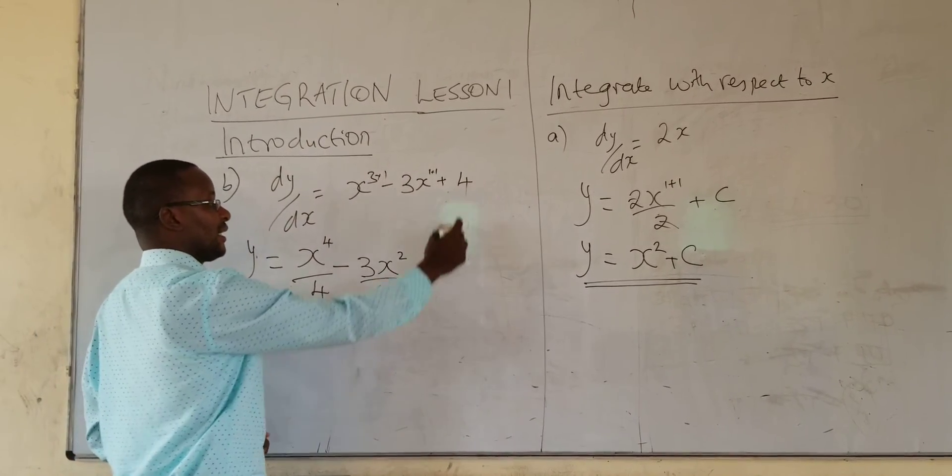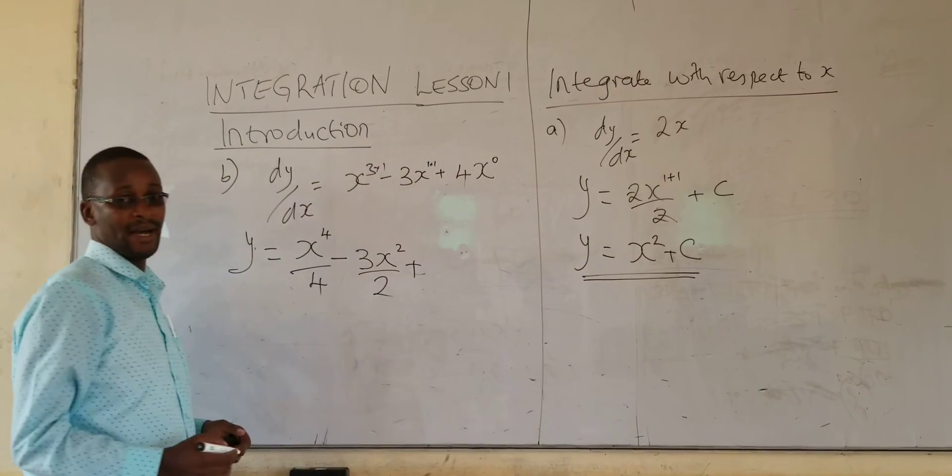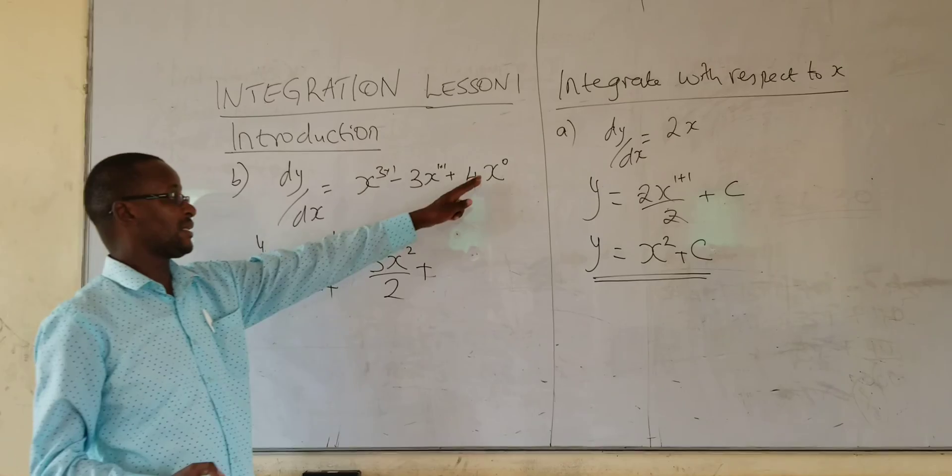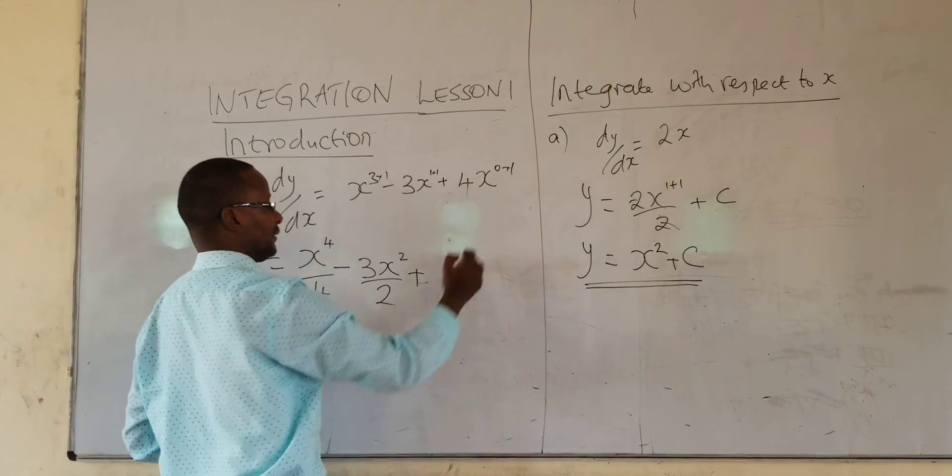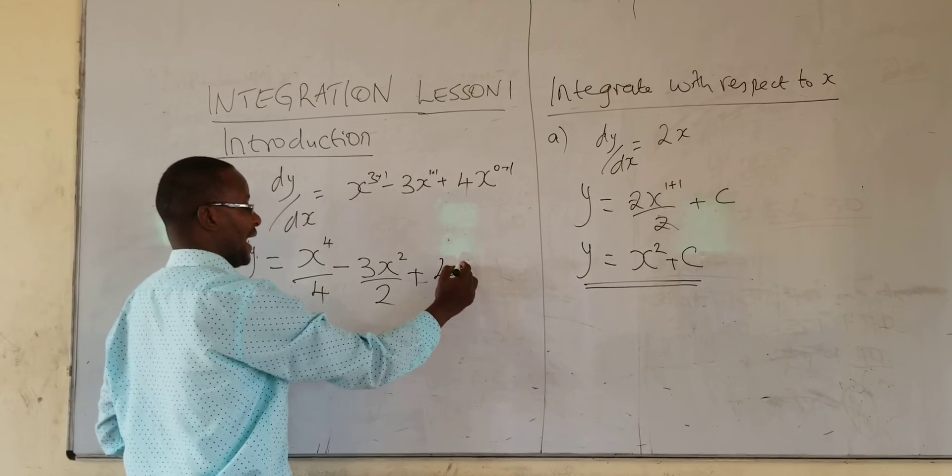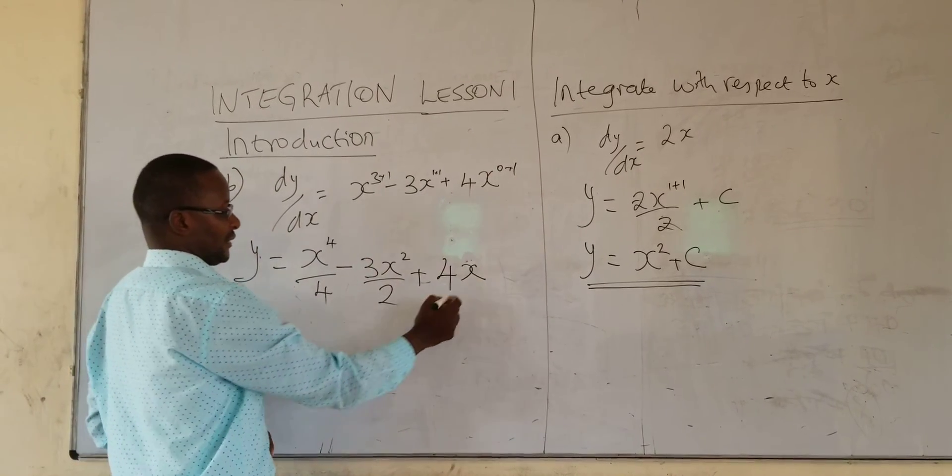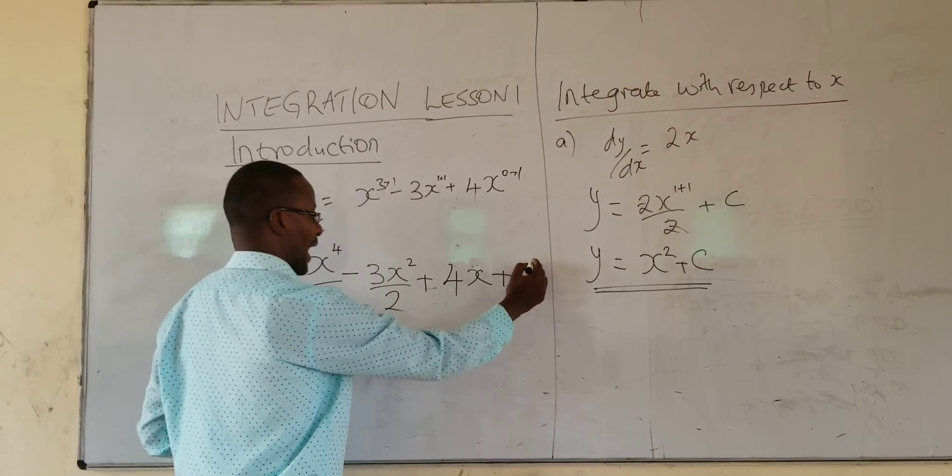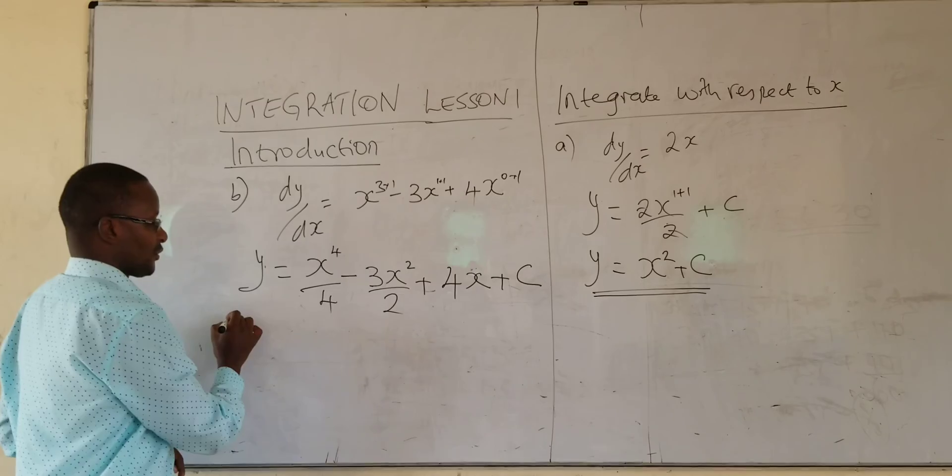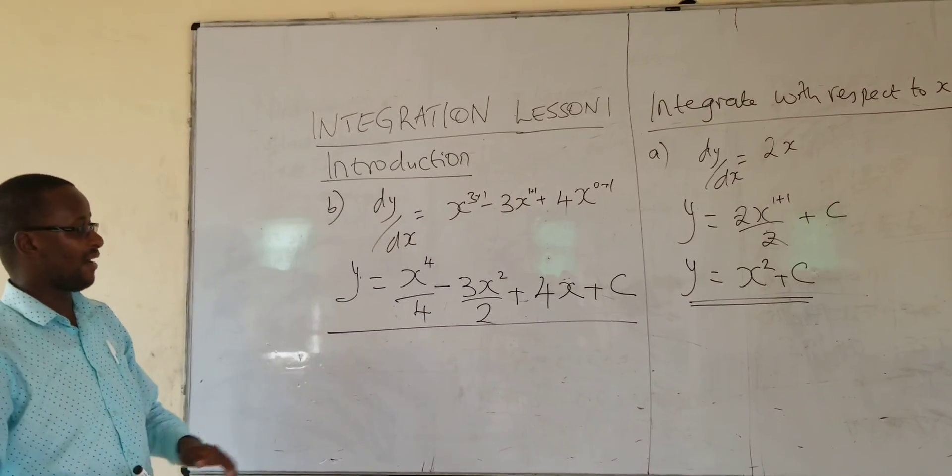Plus, here, 4, there is x but it is power 0. Remember, every number power 0 is 1. So I'm going to add 1 here. You get 4x and then you divide by 1. So it will just remain 4. And don't forget to add a constant. So that is the equation after integration.